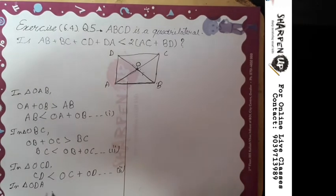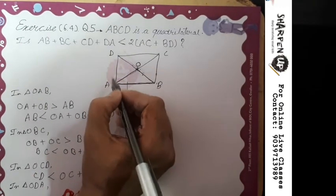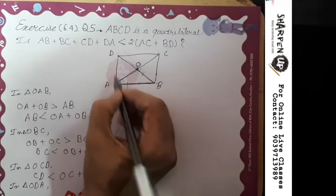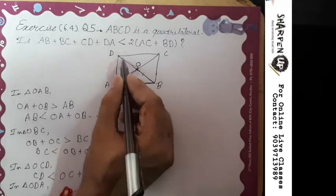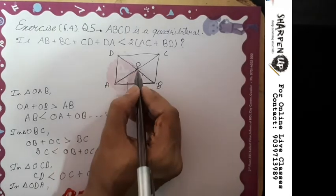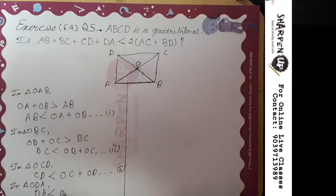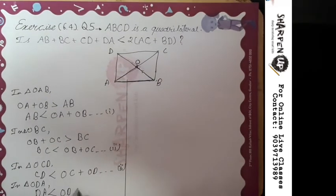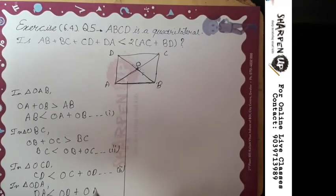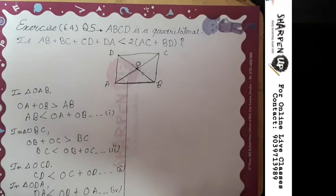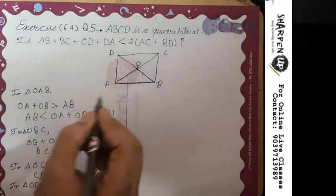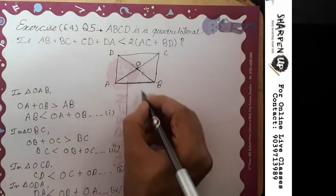Now take our fourth triangle ODA. From here we can write DA is less than OD plus OA. This is our fourth expression.